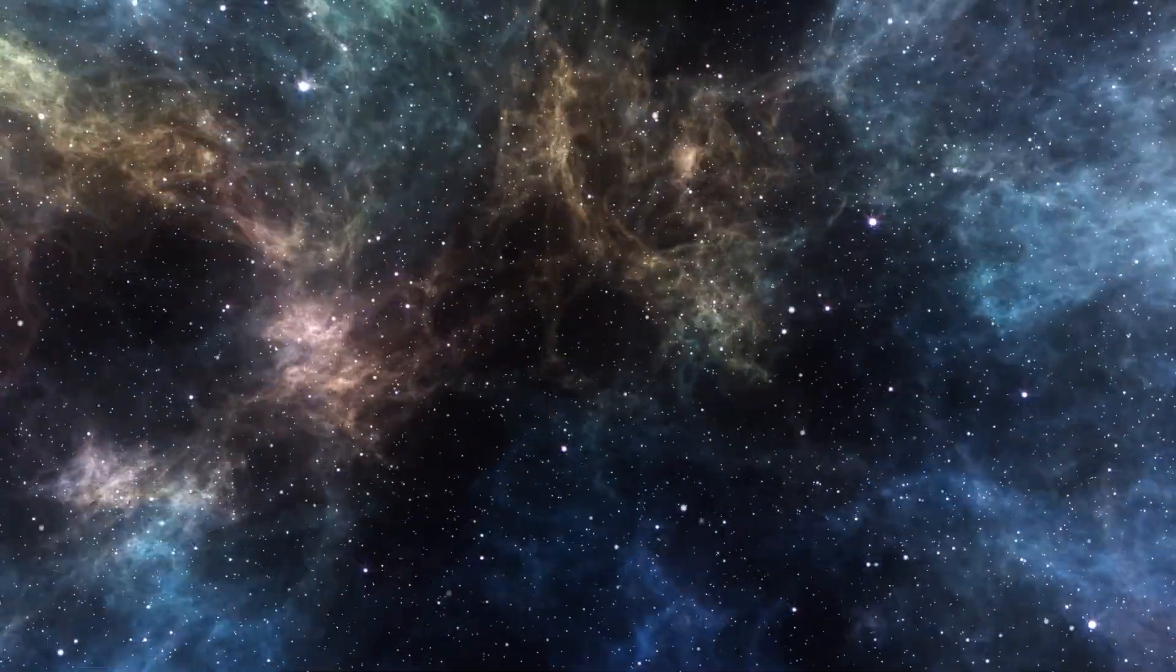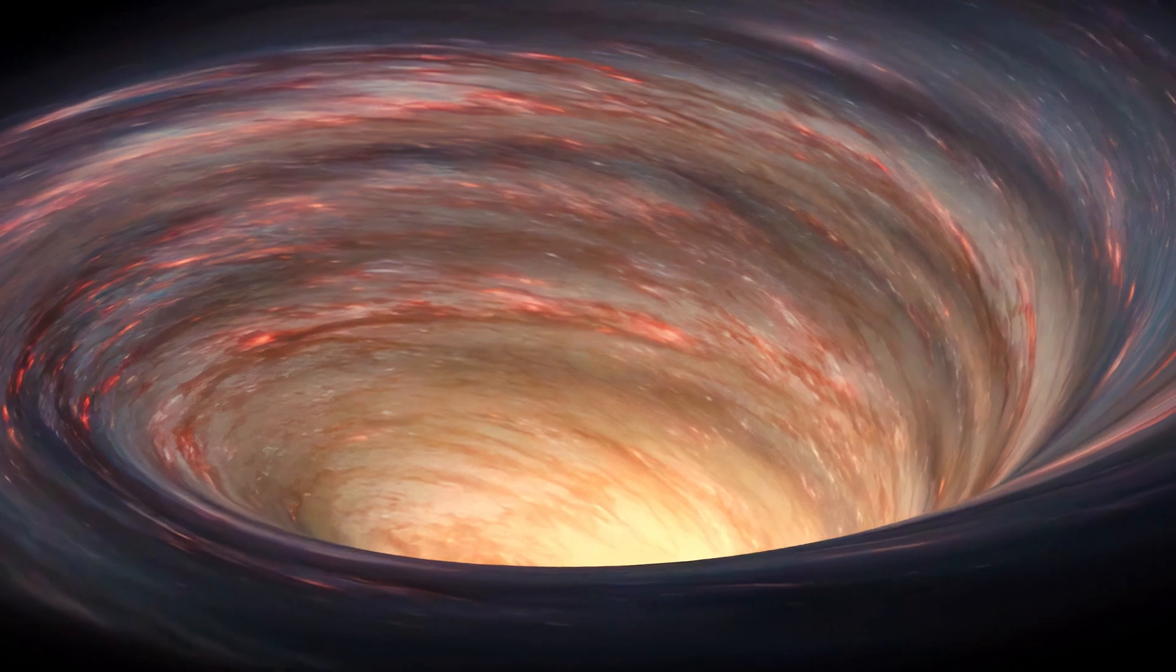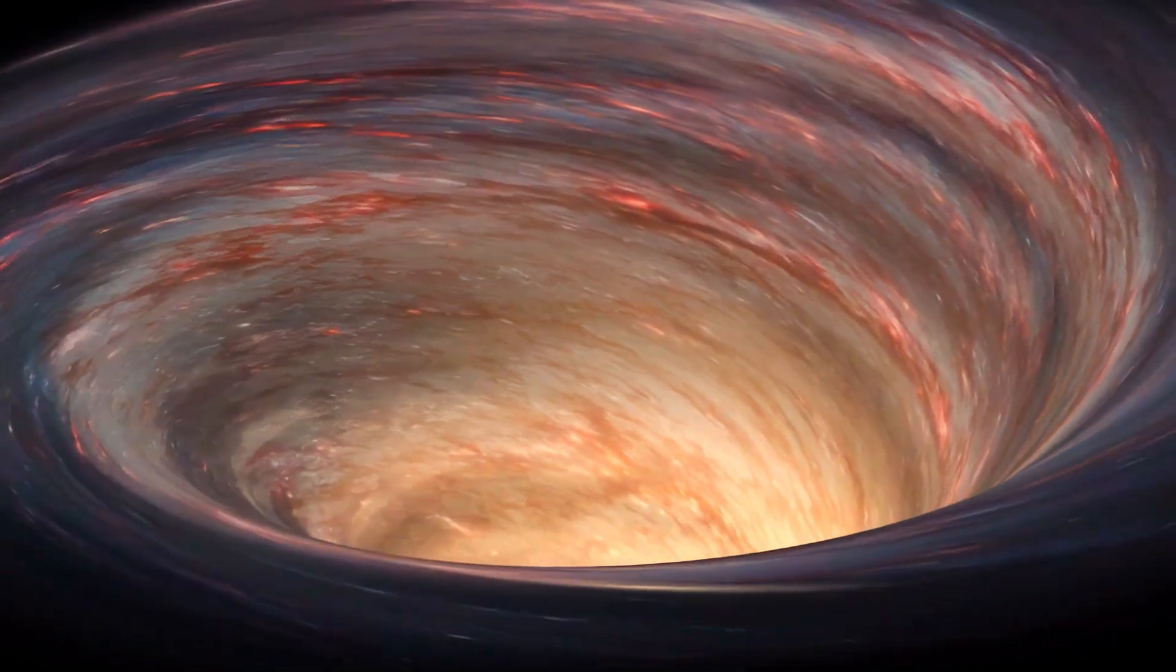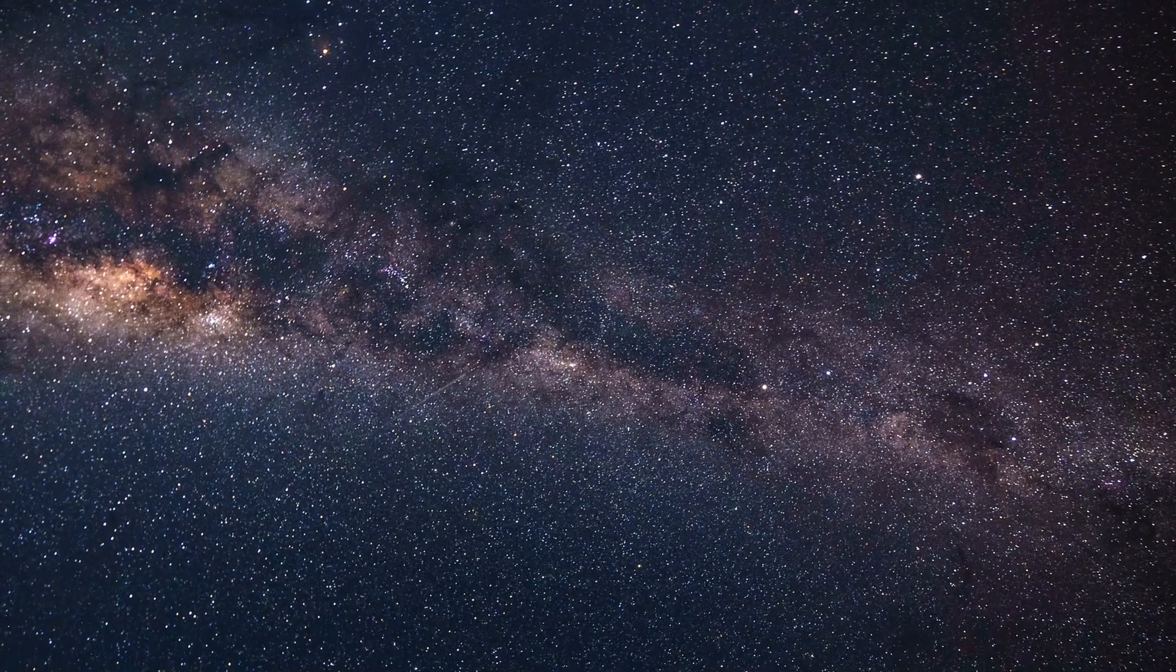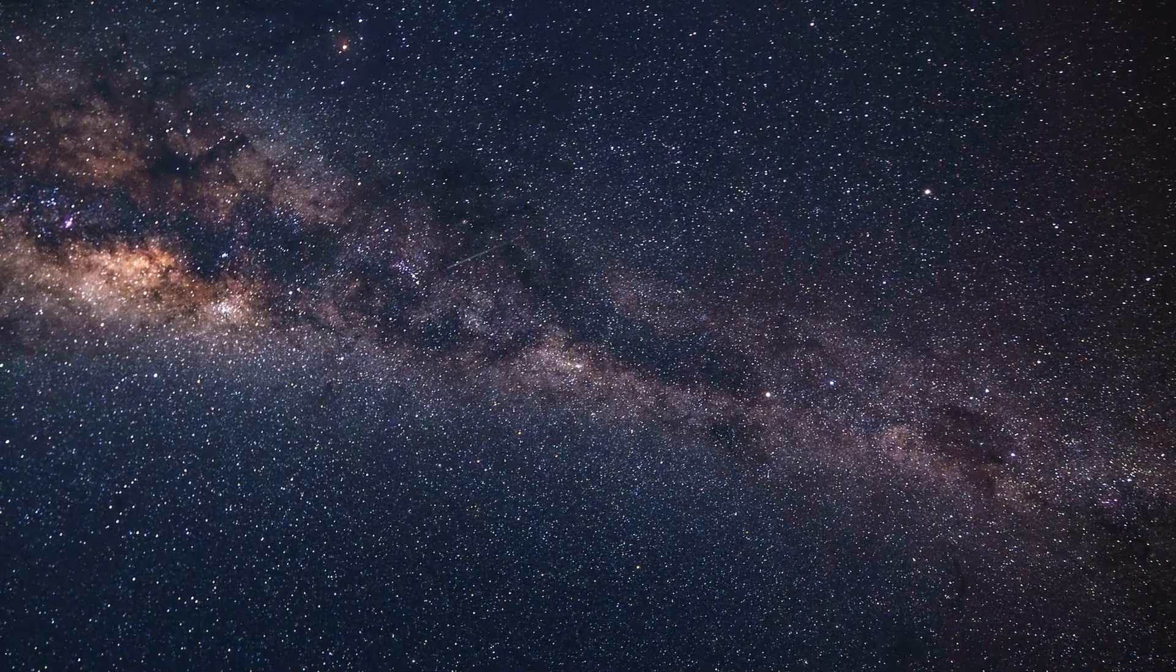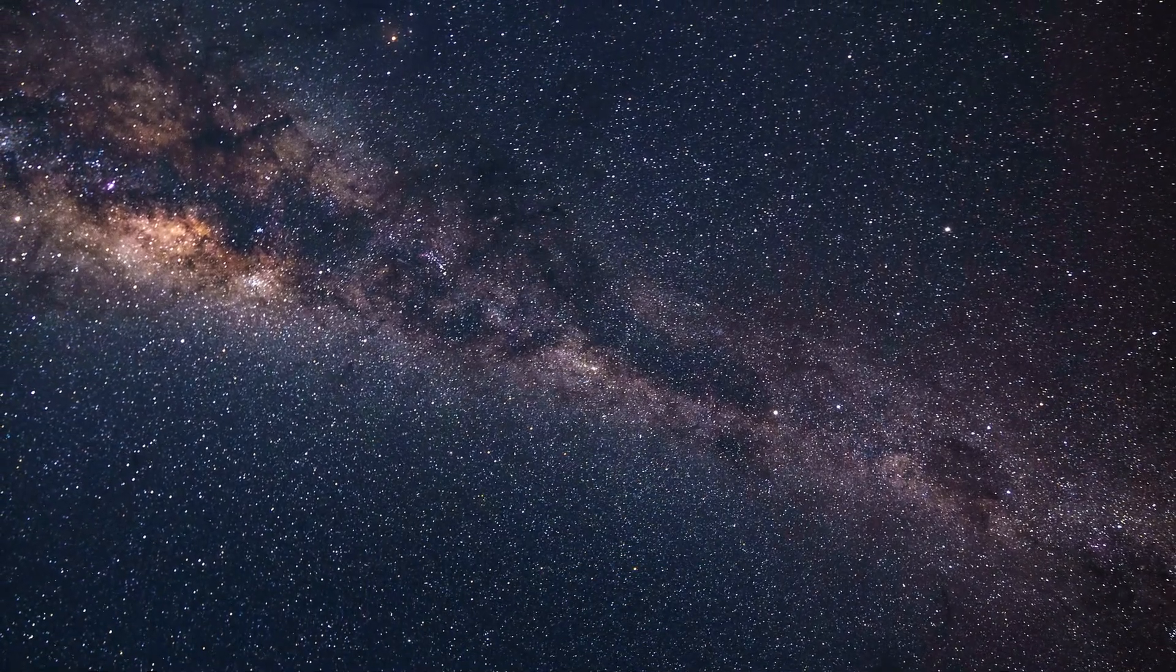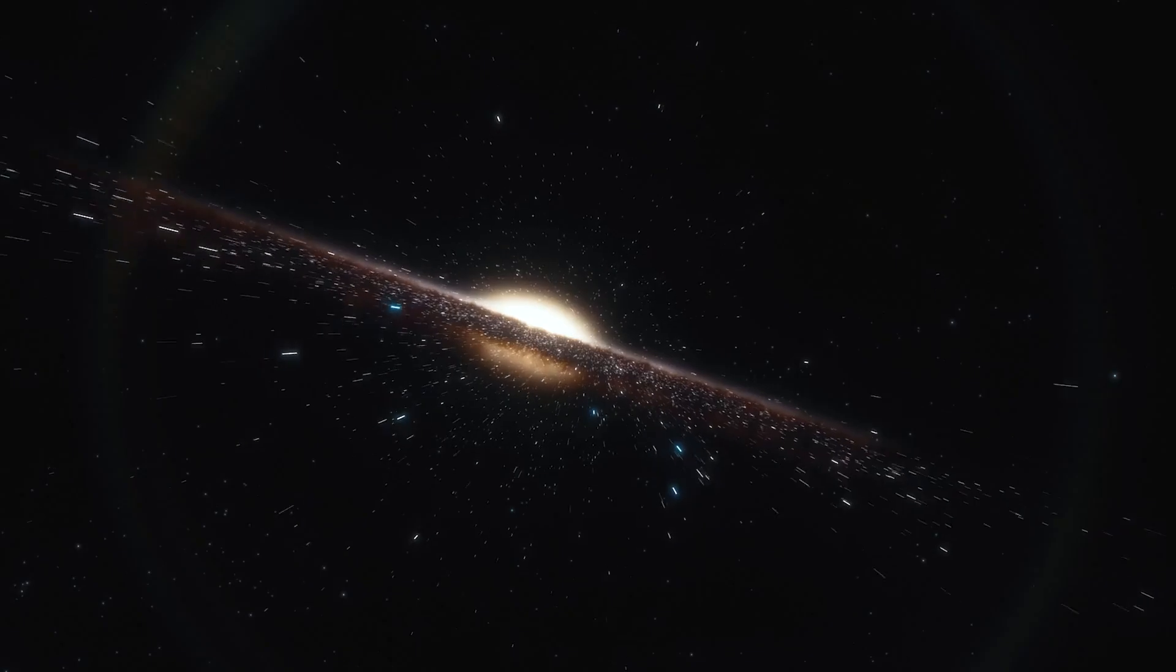These voids are not completely empty. Typically, they contain a few galaxies scattered within their bounds. However, what makes the Boötes Void peculiar is the extreme scarcity of galaxies inside it. Considering its massive size, scientists would expect to find at least a few thousand galaxies within this region.